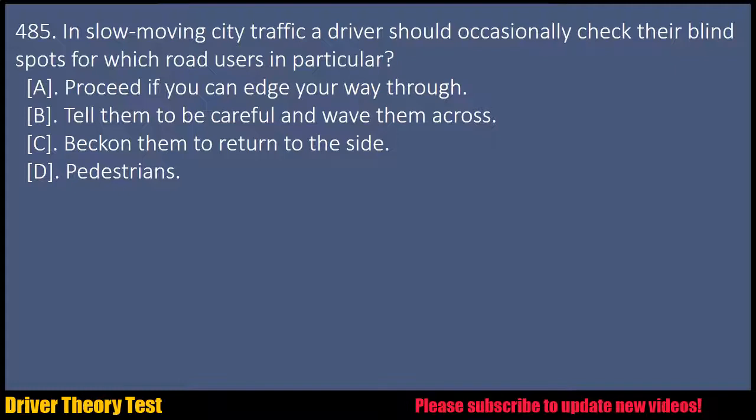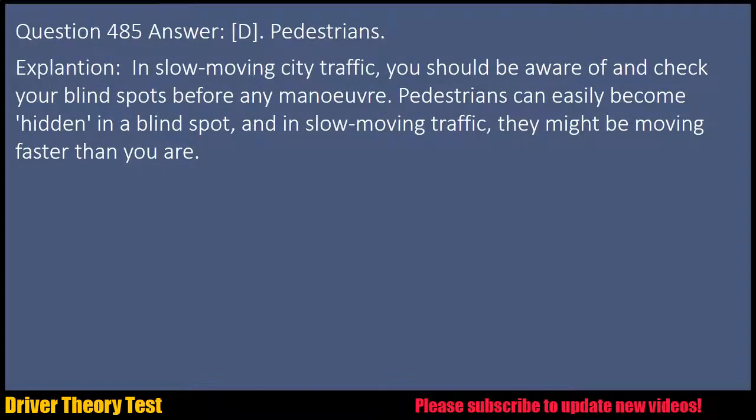Question 485: In slow-moving city traffic, a driver should occasionally check their blind spots for which road users in particular? A. Proceed if you can edge your way through. B. Tell them to be careful and wave them across. C. Beckon them to return to the side. D. Pedestrians. Answer: D. Pedestrians. Explanation: In slow-moving city traffic, you should be aware of and check your blind spots before any manoeuvre. Pedestrians can easily become hidden in a blind spot, and in slow-moving traffic, they might be moving faster than you are.